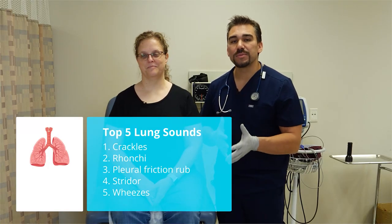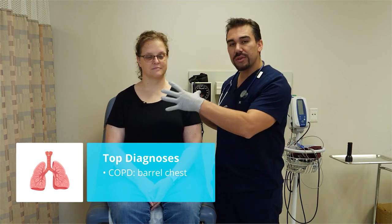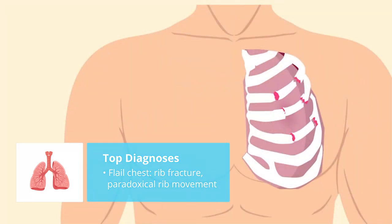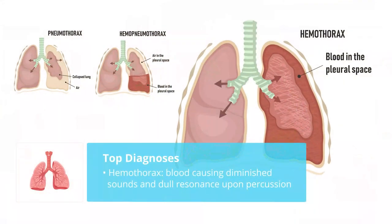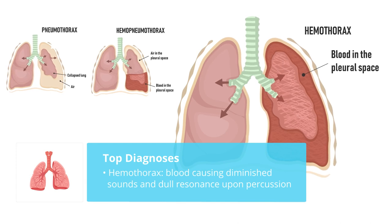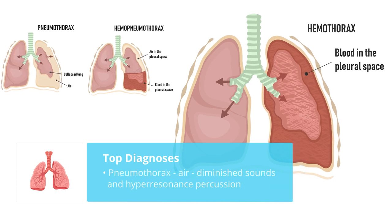Wheezes are common after asthma or asthma attacks. The top diagnosis in the lung area is typically COPD. Patients with COPD have a lot of air trapping, so they're going to have a huge barrel chest. Another thing you might find with trauma patients is a flail chest, where you basically have a rib fracture that protrudes out when the patient is breathing. For hemothorax, blood fills up the lung space — we'll hear diminished lung sounds as well as dull resonance upon percussion. For pneumothorax, you have air inside the lung space; you'll hear diminished lung sounds and hyper-resonant percussion — it sounds like tapping on an empty paint can or a hollow tree.